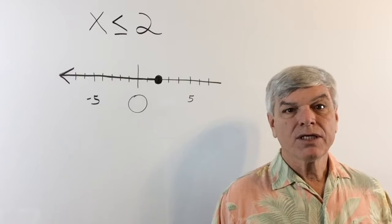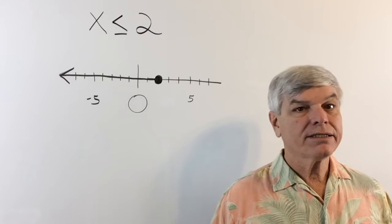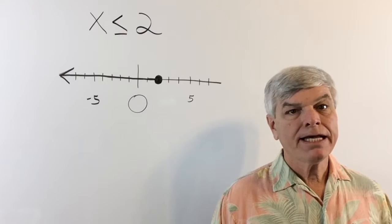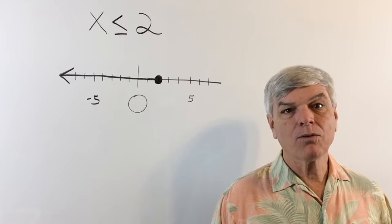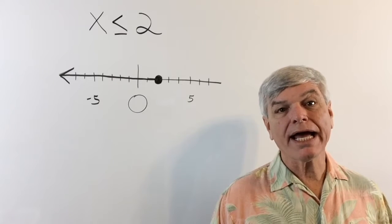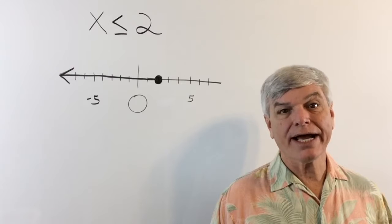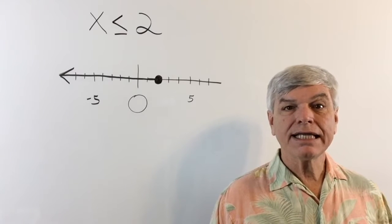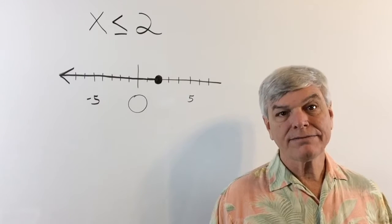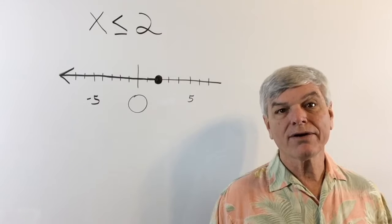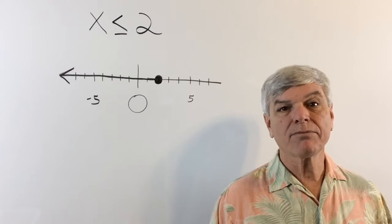Mr. Wallace uses a different symbol for less than or equal to — he uses a bracket facing in the same direction as the arrow, and if it's going the other direction, the bracket faces the other direction. You don't need to know that; that's not what is normally used in math. When you're doing your homework and checking answers, if you see that c, remember it means less than. If you see the bracket, it means less than or equal to, or greater than or equal to, depending on which way the bracket is facing.